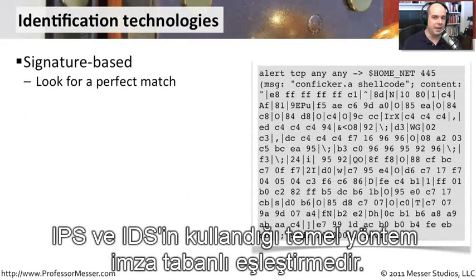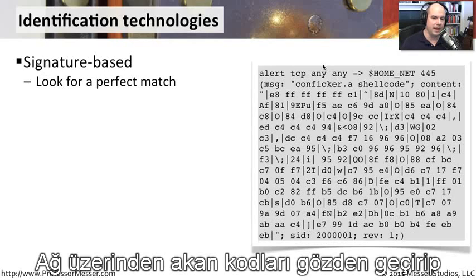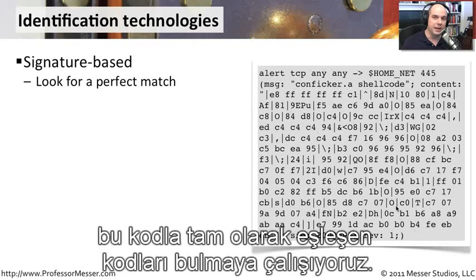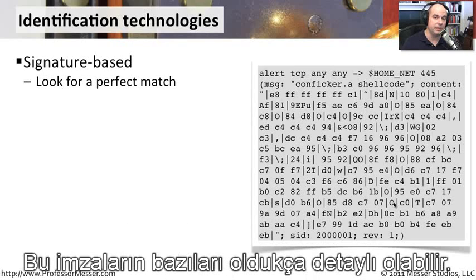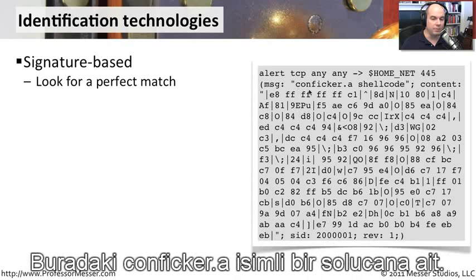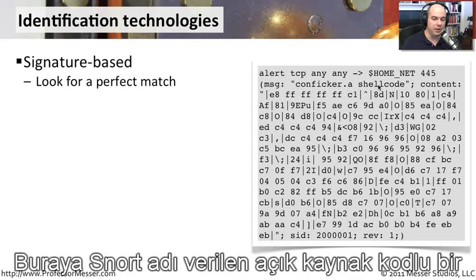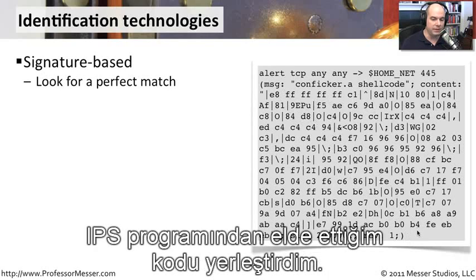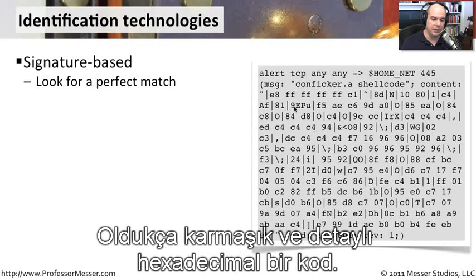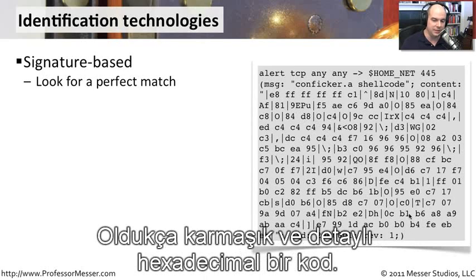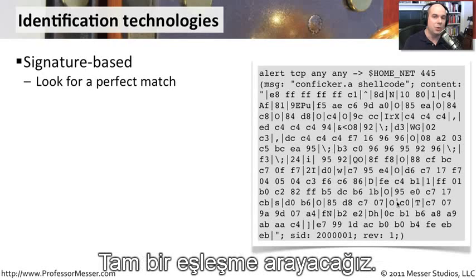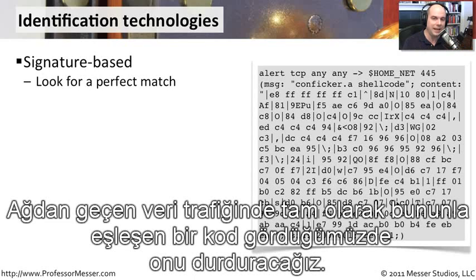A fundamental technology used in IPS's and IDS's is called a signature-based match. We look at the exact code going over the network, and if we see a matching pattern, we stop that traffic. Some signatures can be very detailed — this is one for a worm, a config or dash-a shell code pulled from an open source IPS system called Snort. It's pretty complex, all in hexadecimal. Once these signatures are in place, we're looking for an exact match, and if we see anything matching that data going through the network, we stop it right there.